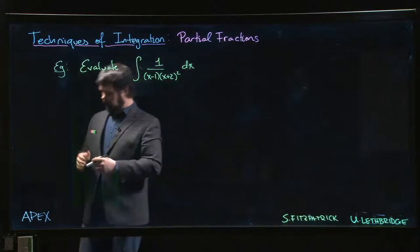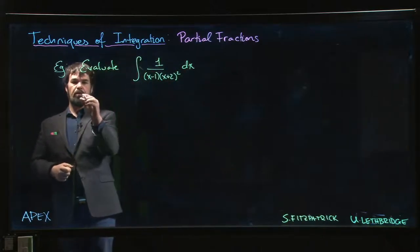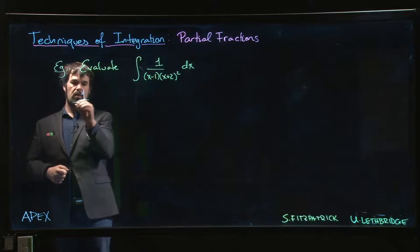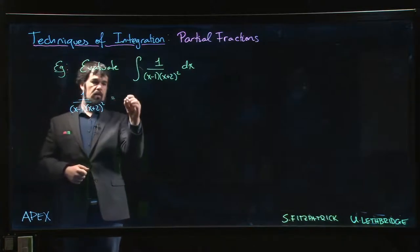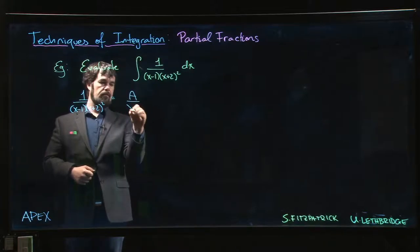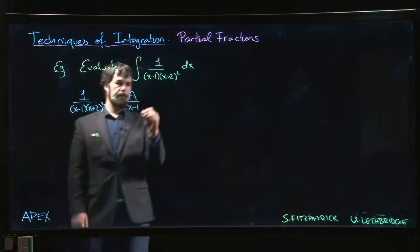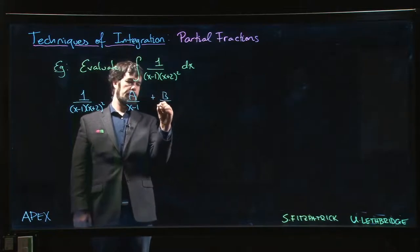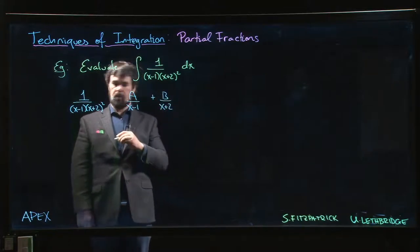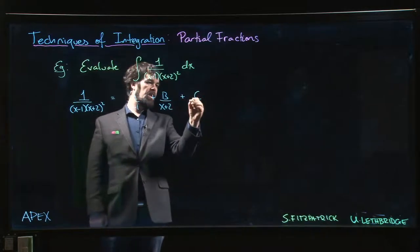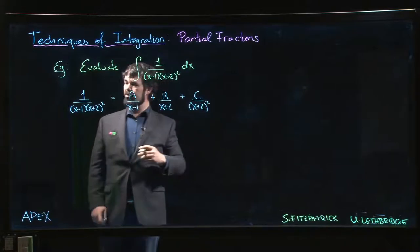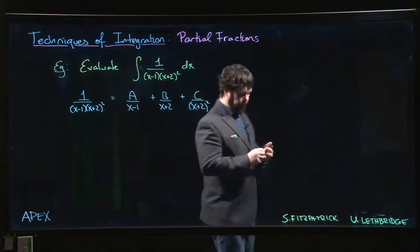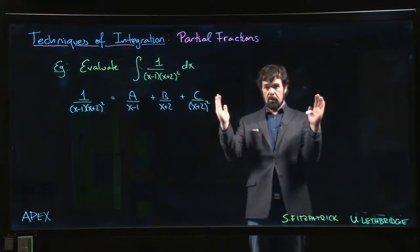So we look for our partial fraction decomposition and we expect that we should have 1 over (x minus 1) times (x plus 2) squared equal to some factor A over (x minus 1) plus B over (x plus 2) plus C over (x plus 2) squared.